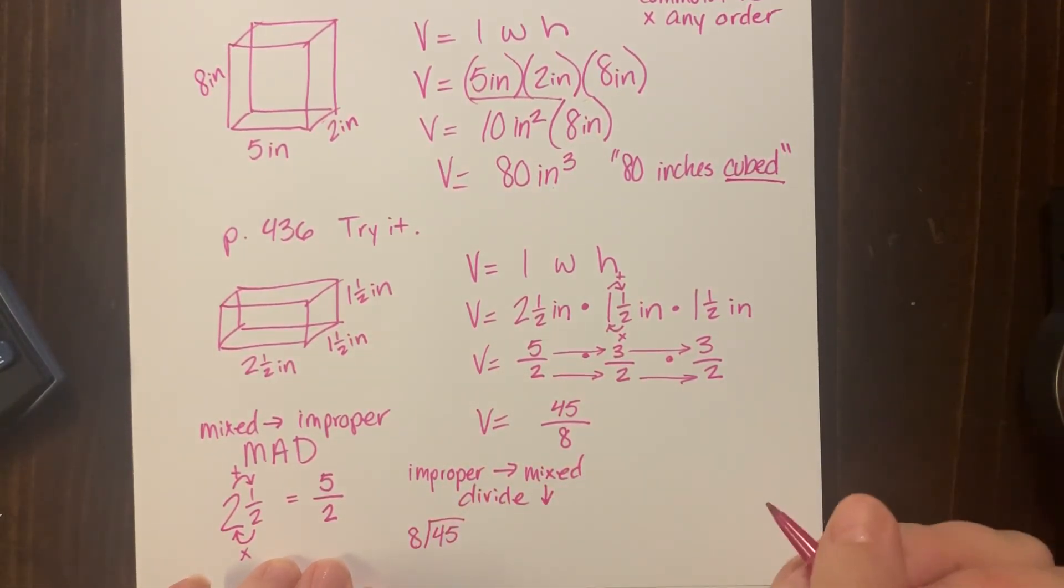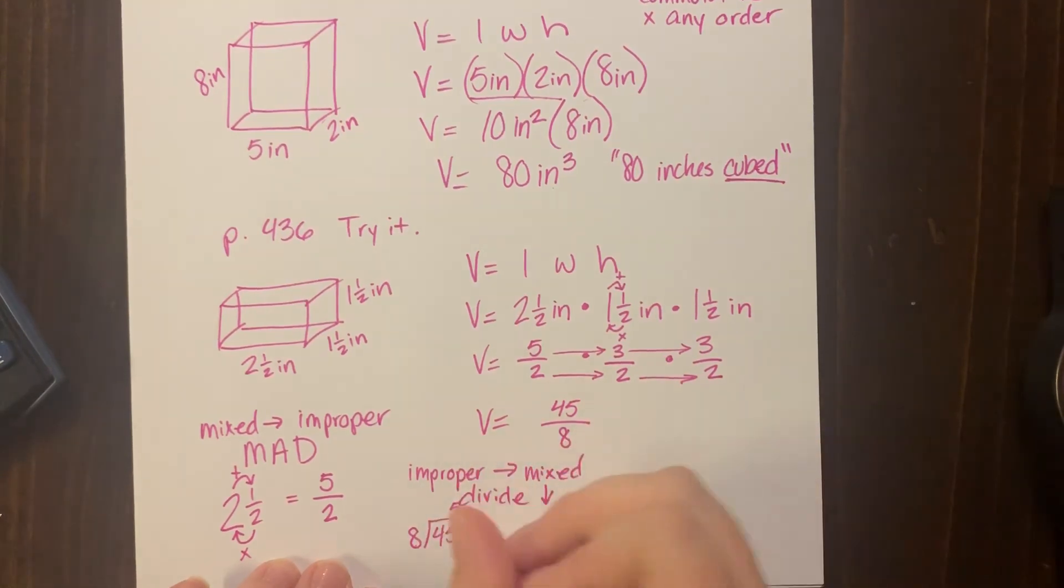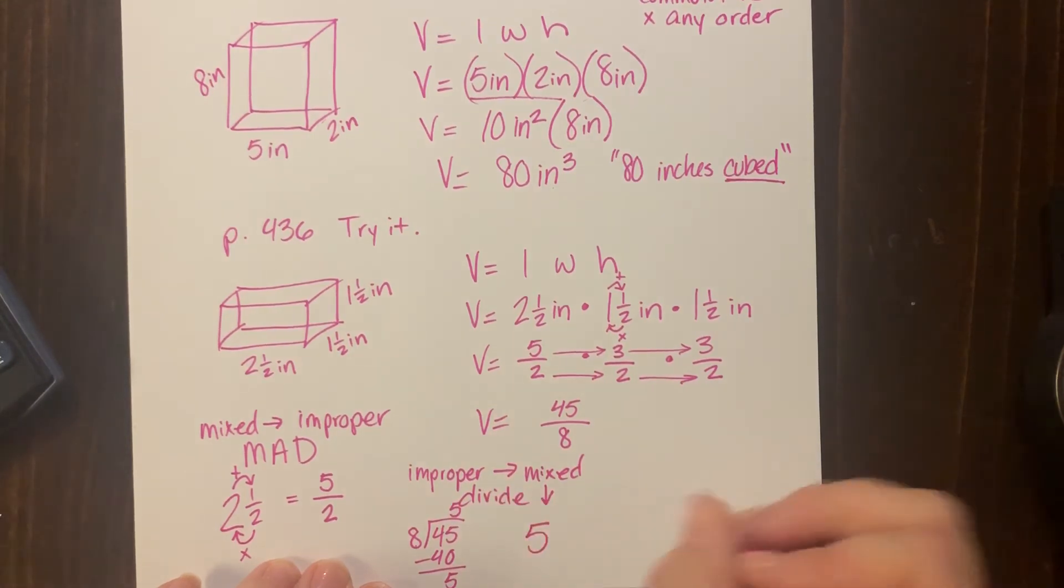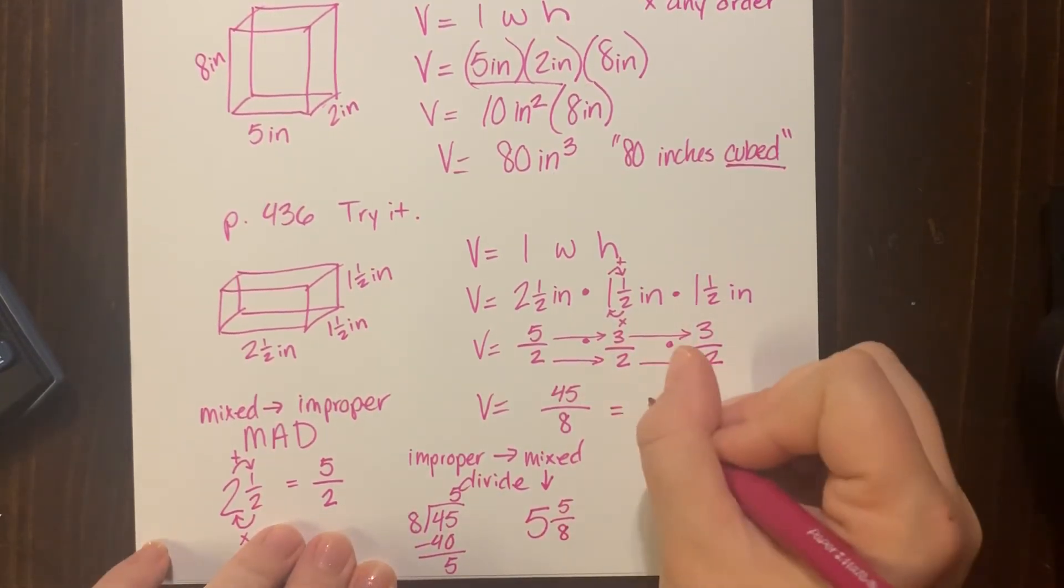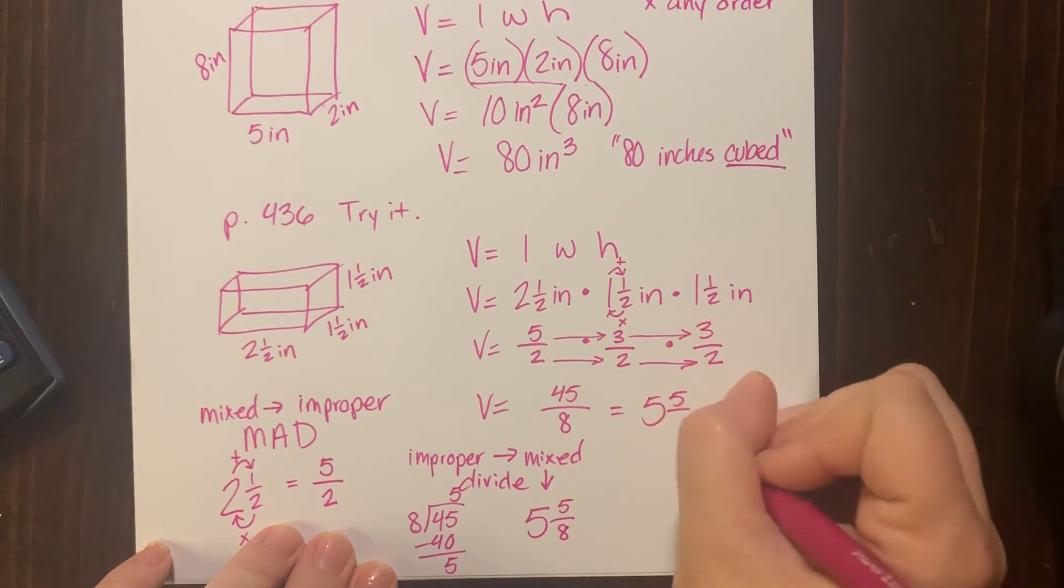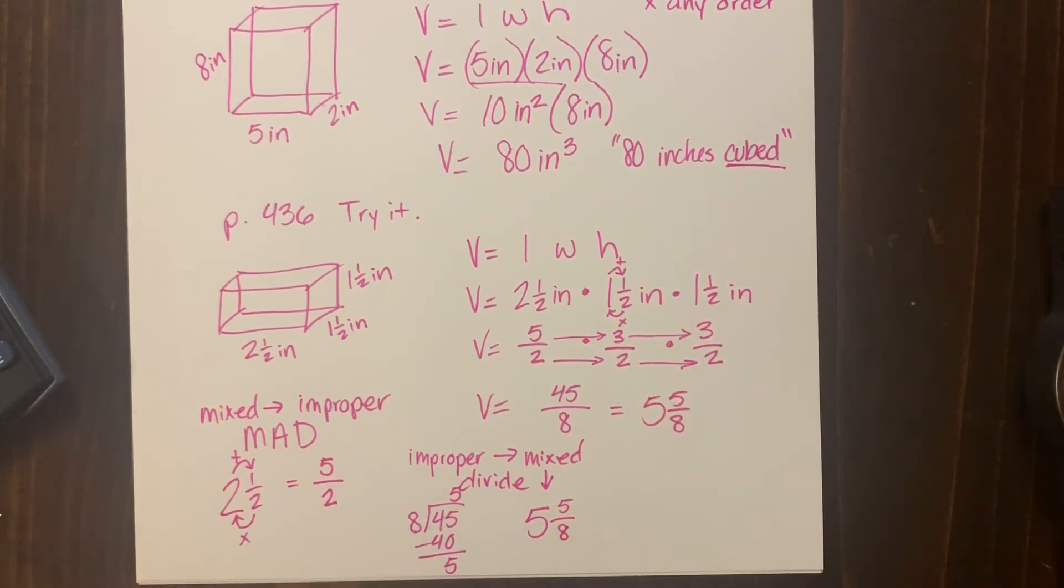Okay, so 45 goes inside the house, divided by eight. Eight goes into 45 five times. Five times eight, 40, and I have five left over. So five is my whole number. That's where I got it from: five whole times. That little remainder of five becomes my numerator, and I always keep my denominator. So five and five eighths. And what about my units? I just found volume. What does that mean?